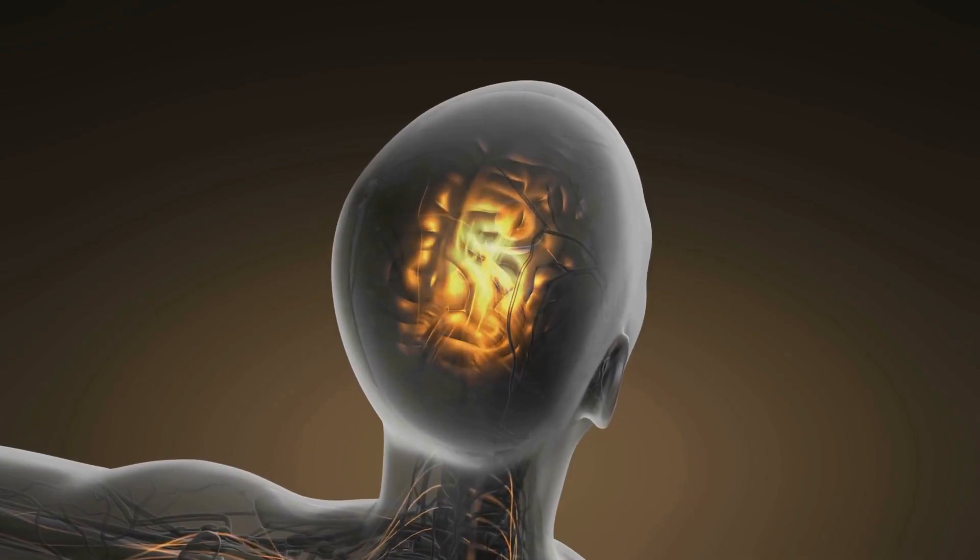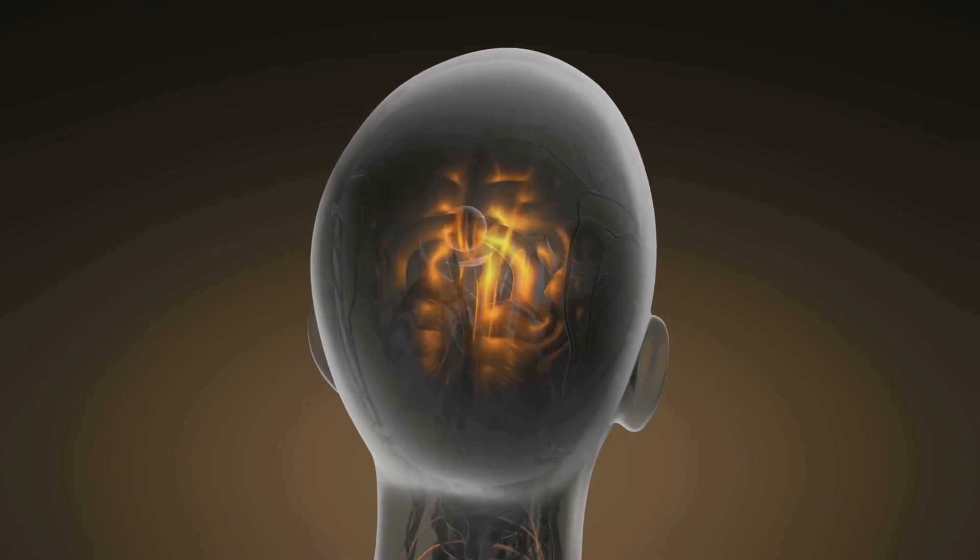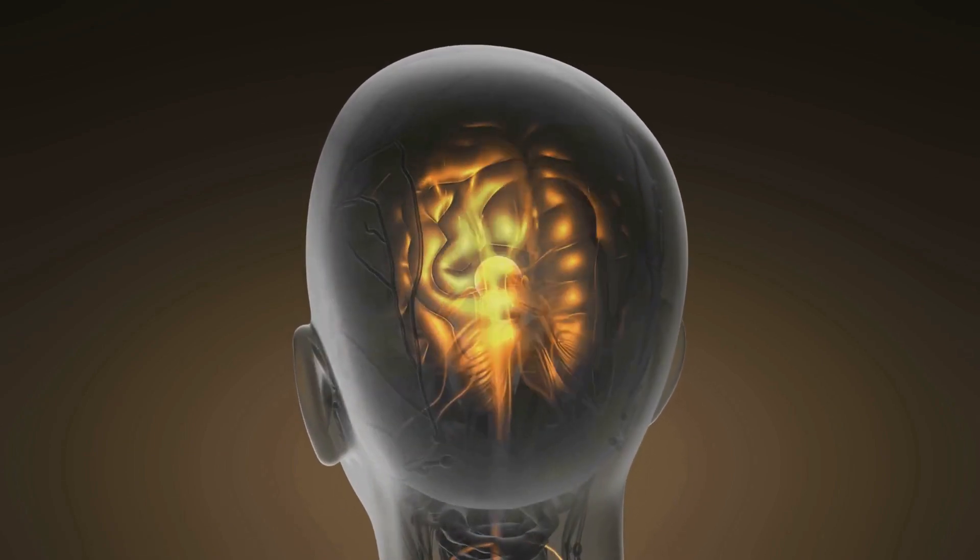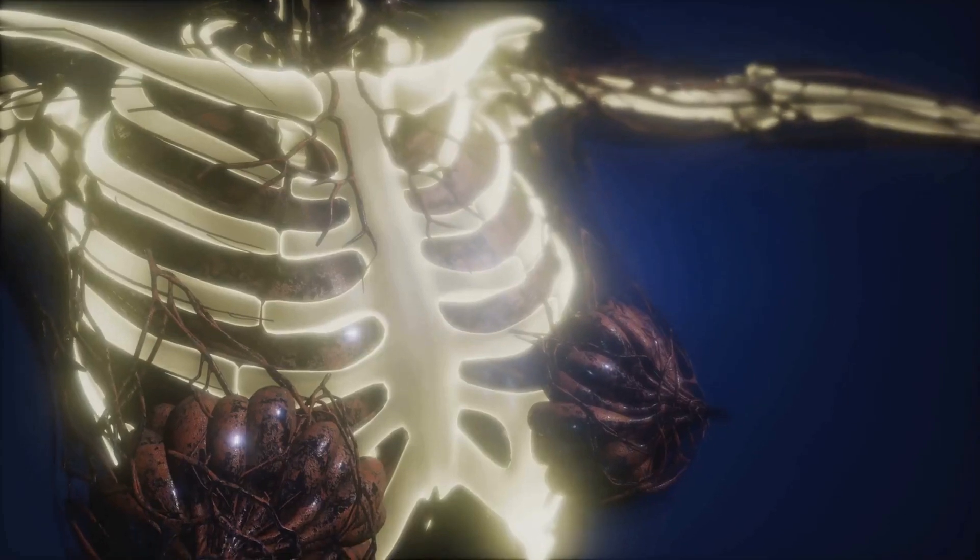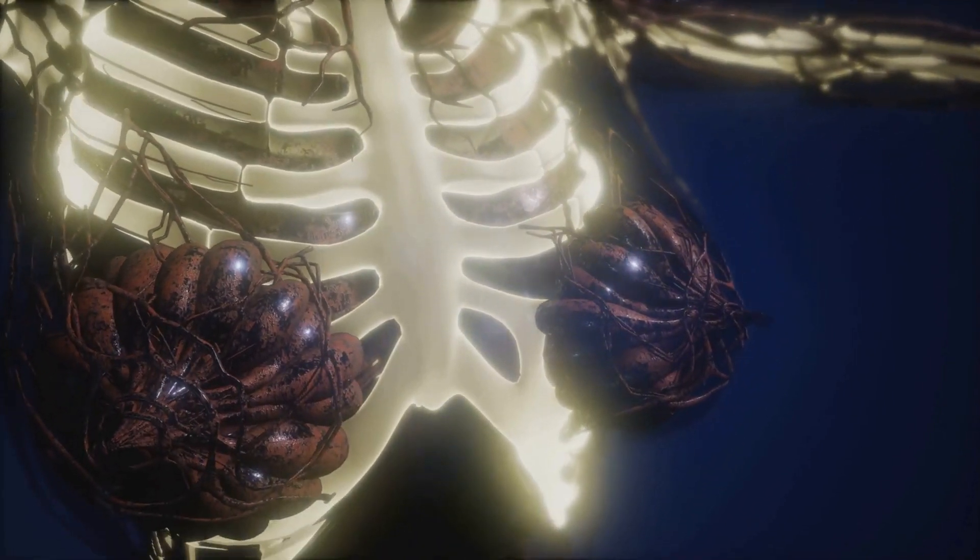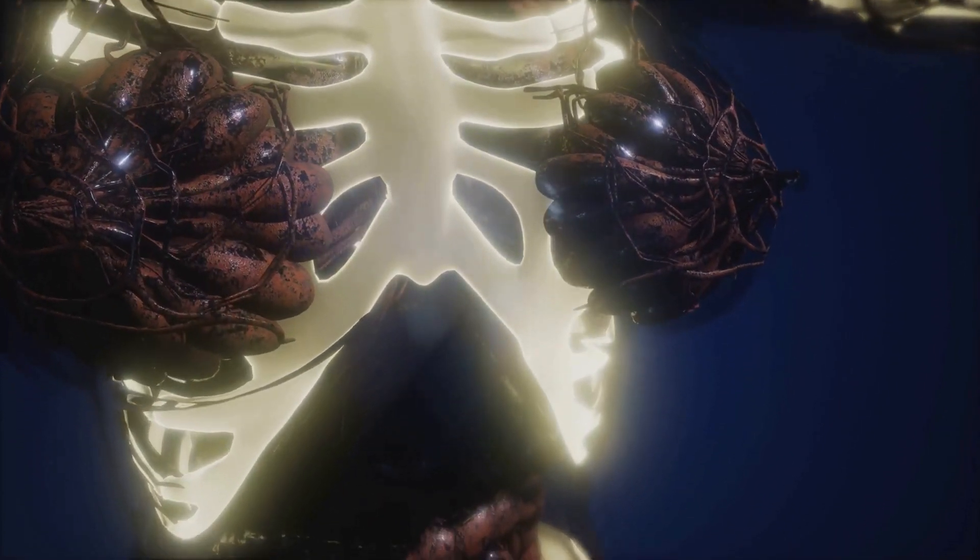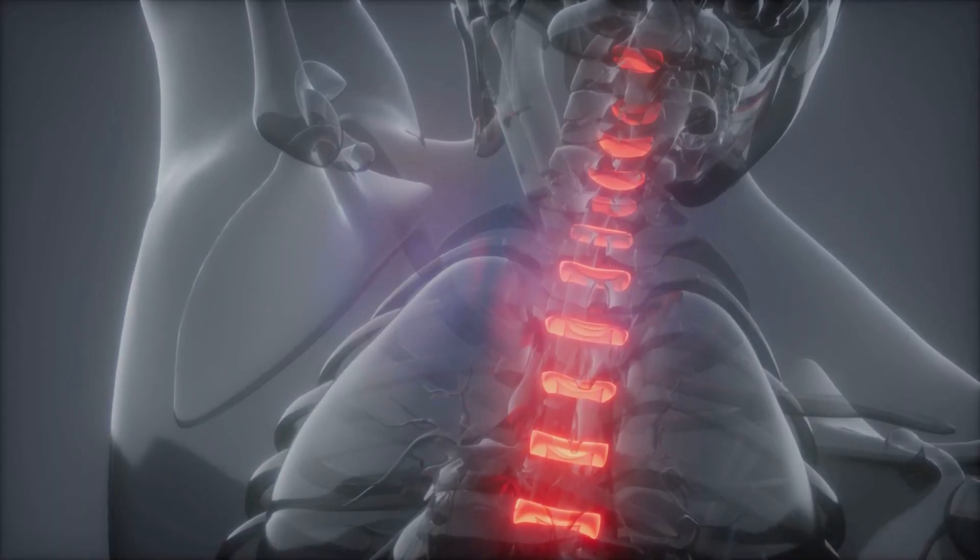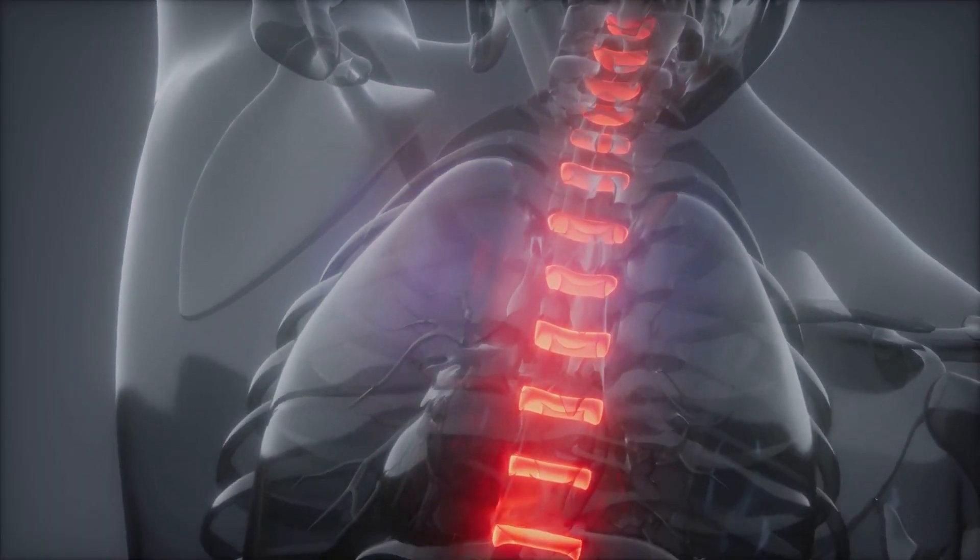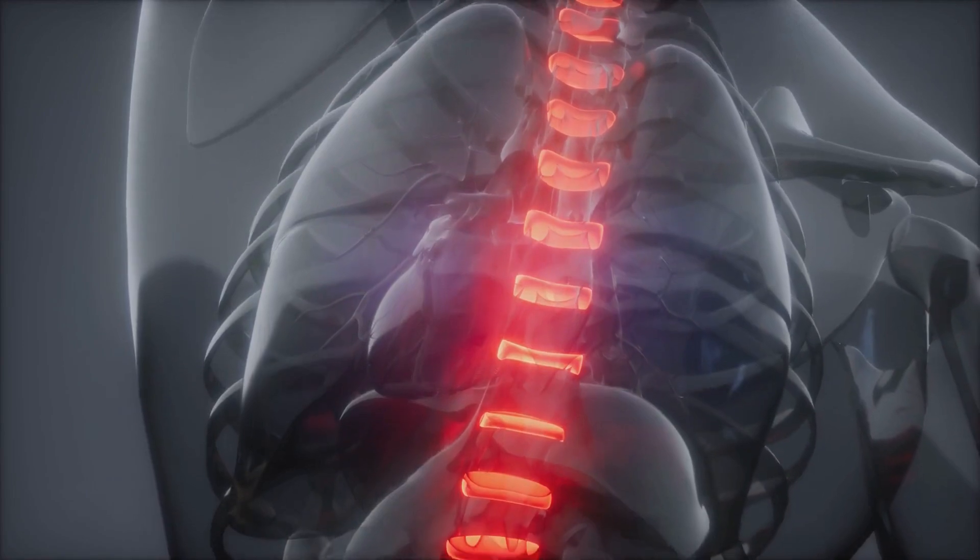Your skull is like a helmet protecting your precious brain from bumps and knocks, so you can think, dream, and learn safely. Your ribs form a sturdy cage around your heart and lungs, keeping them safe every time you breathe, laugh, or even hiccup. And your spine? It's a flexible stack of vertebrae that lets you bend, twist, and stretch in all directions while also protecting your spinal cord.